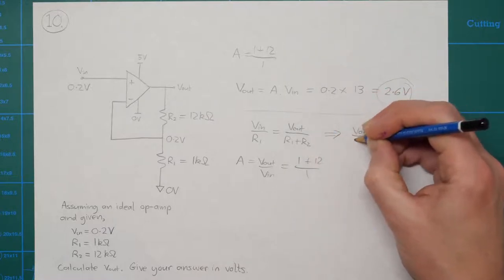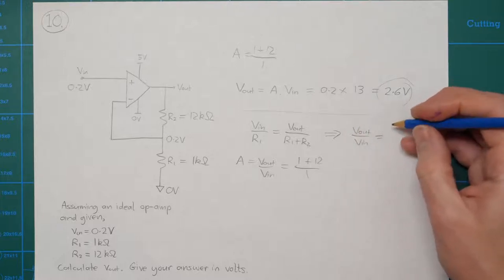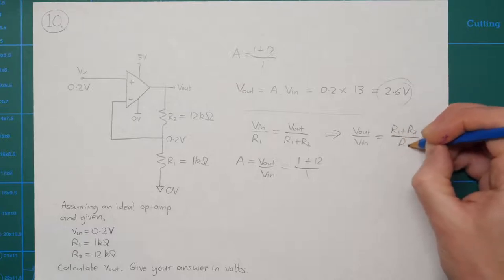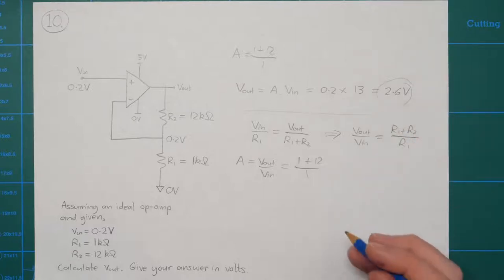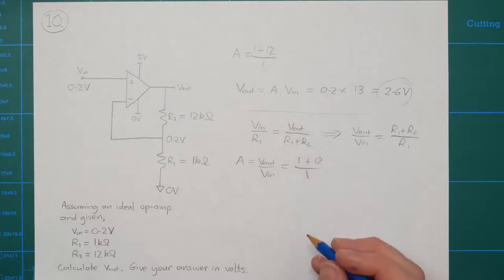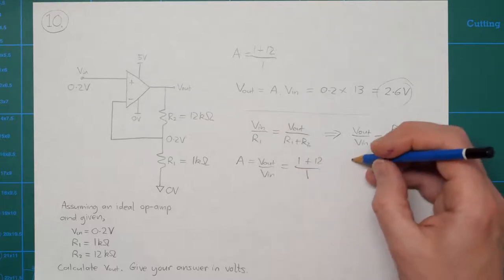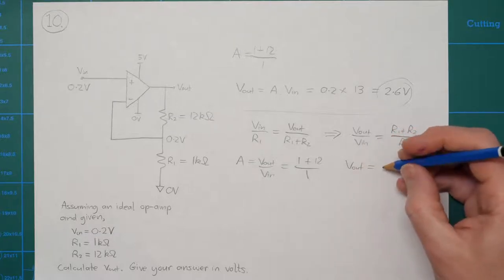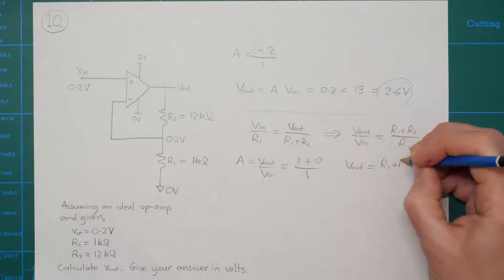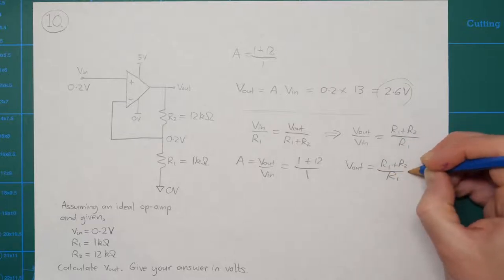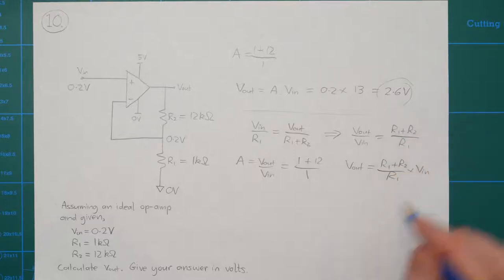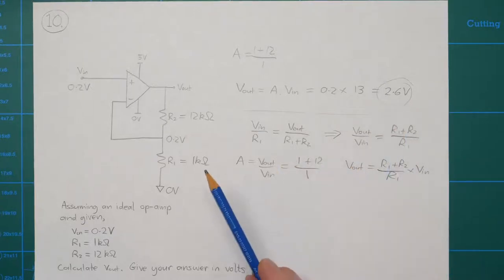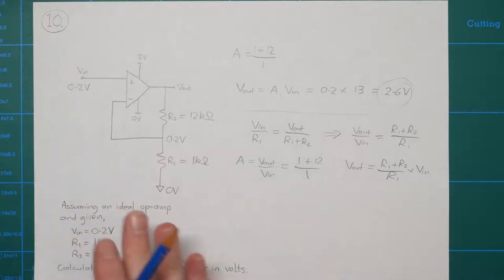From this, the gain A equals Vout over Vin, which is (R1 plus R2) over R1 — the same 1 plus 12 over 1 we already saw. You can rearrange this to calculate Vout directly as (R1 plus R2) over R1 multiplied by Vin. It's just a different way of thinking about the same thing, and the answer remains 2.6 volts. Okay, that was question 10.